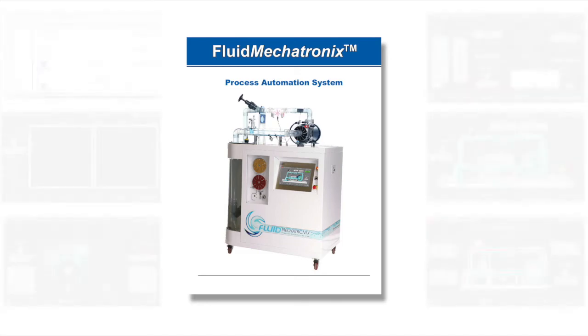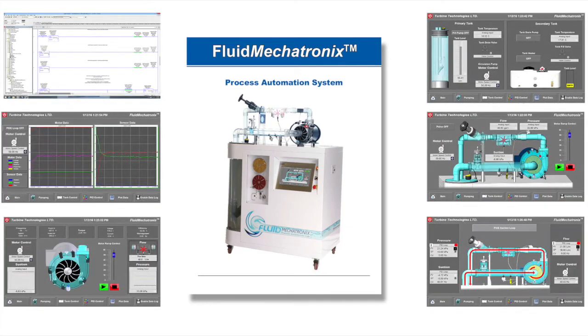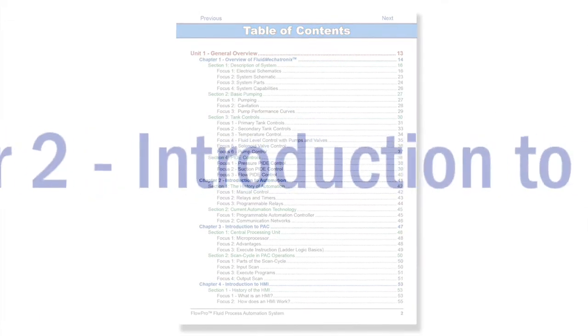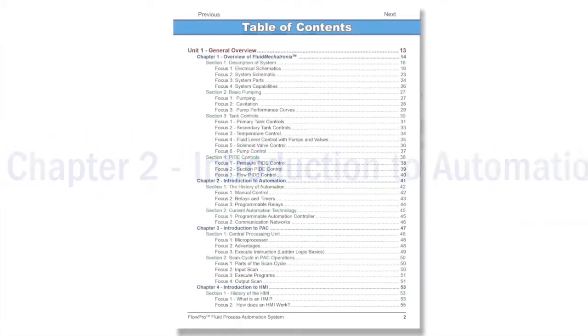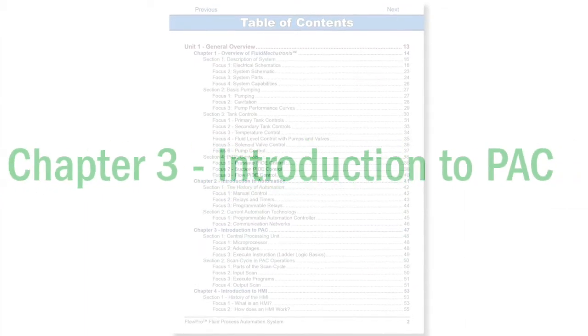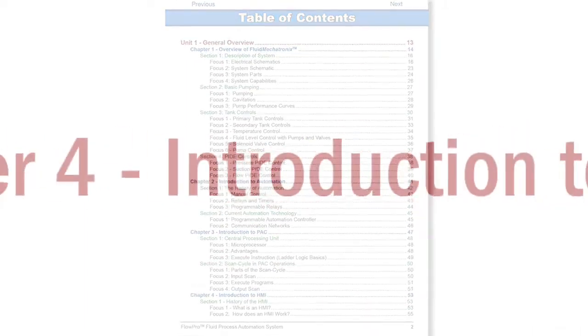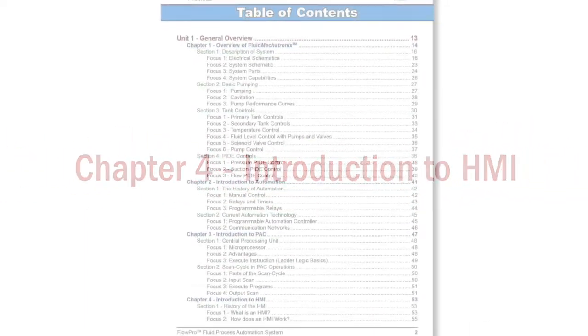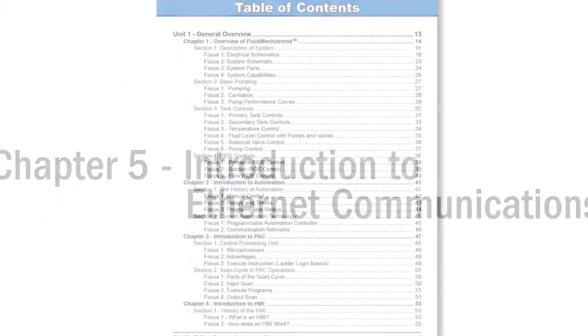The comprehensive lab curriculum is included with the system and covers each subject area in detail. Each topic builds knowledge and skills that enable students to progressively create and execute real process automation situations. This building block approach effectively develops expertise in a hands-on environment.